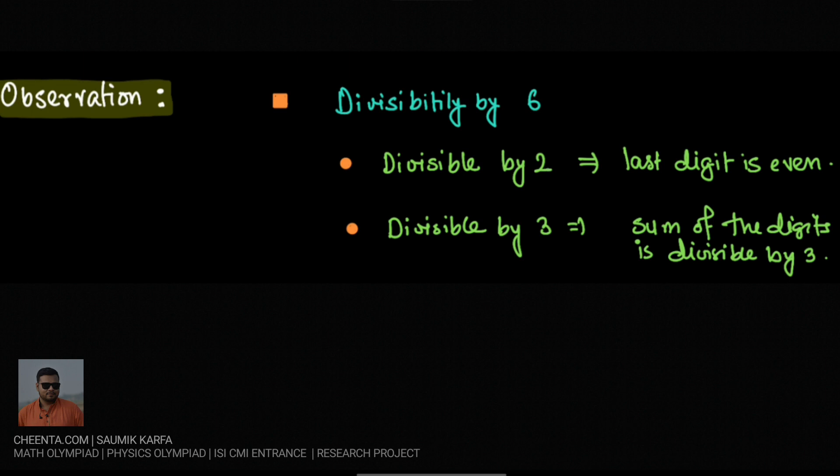When they are divisible by 2, the last digit must be an even number. This is the divisibility rule of 2. And when divisible by 3, the sum of its digits needs to be divisible by 3.